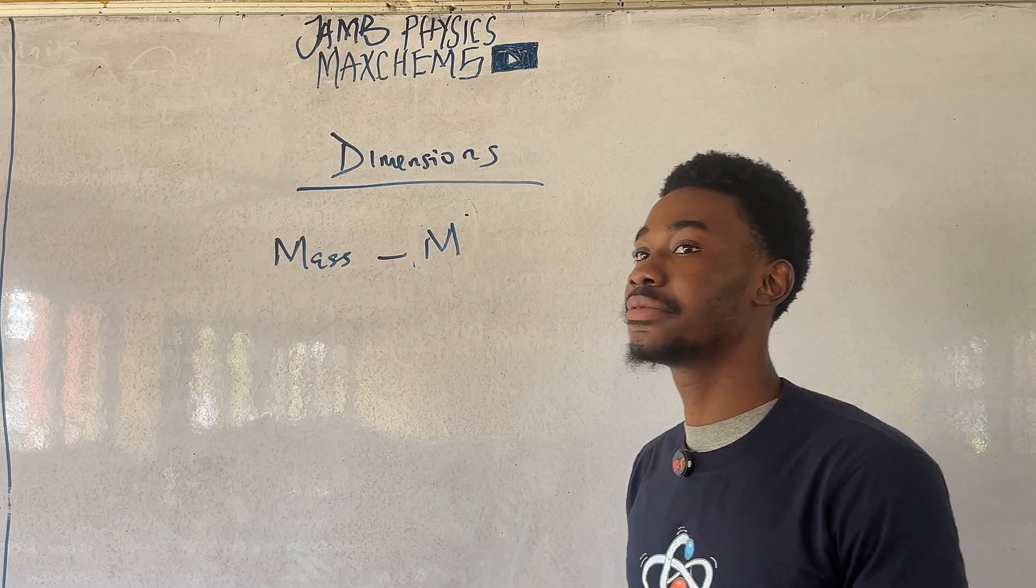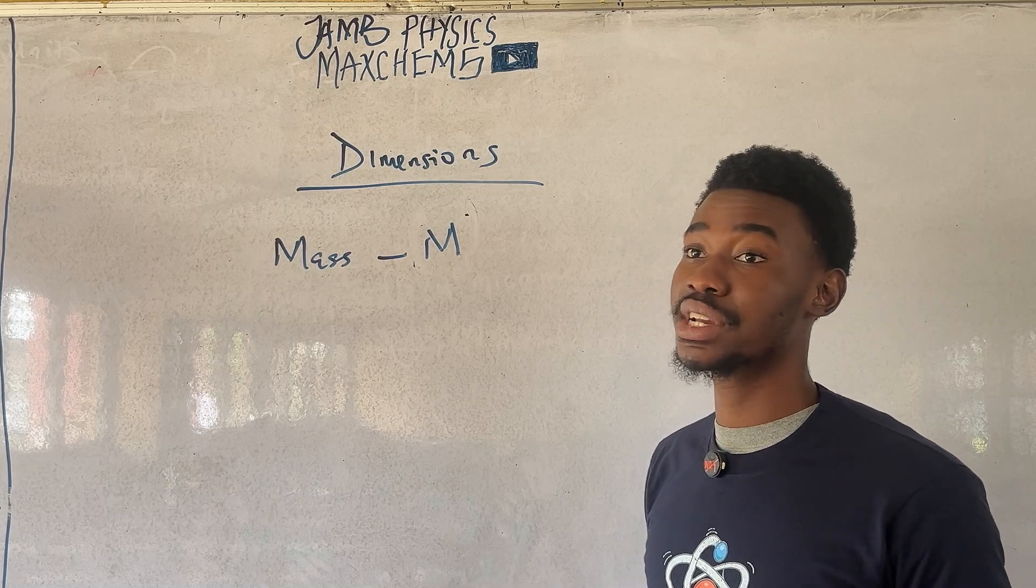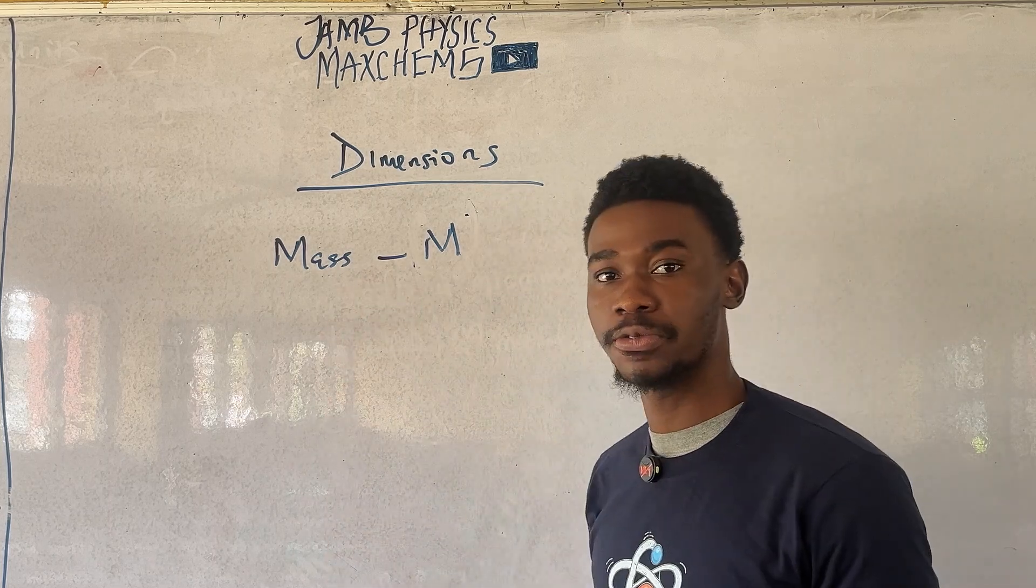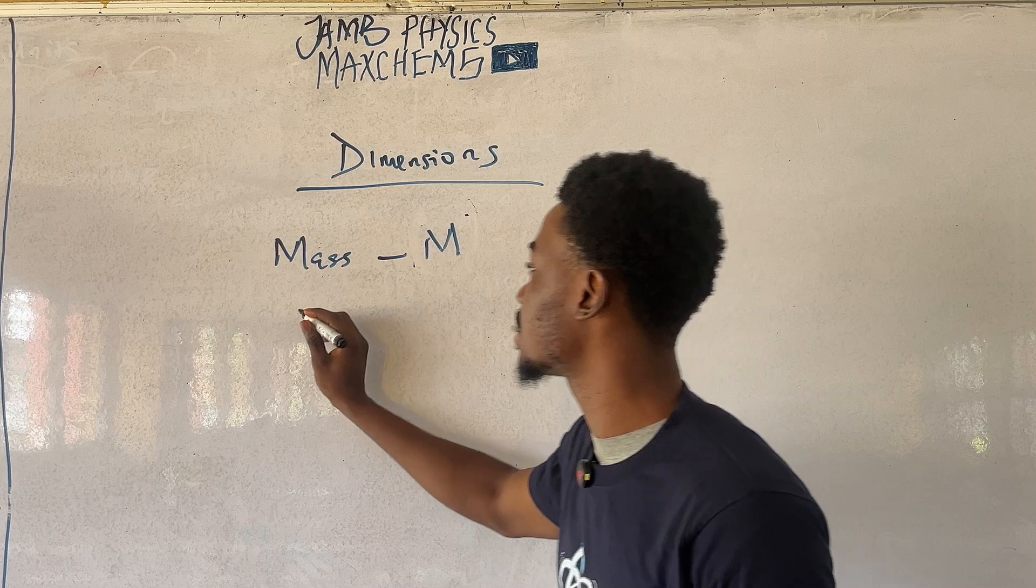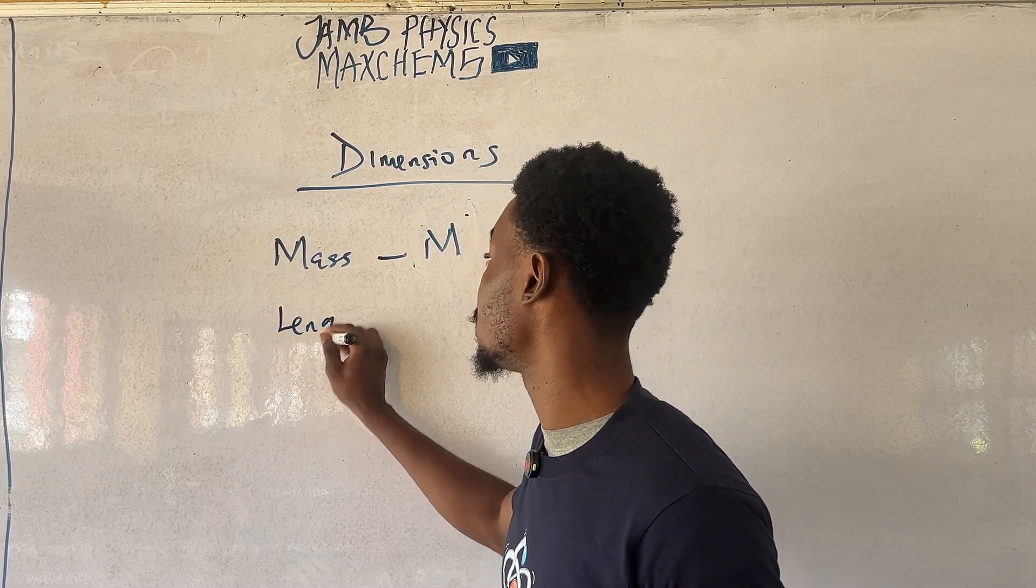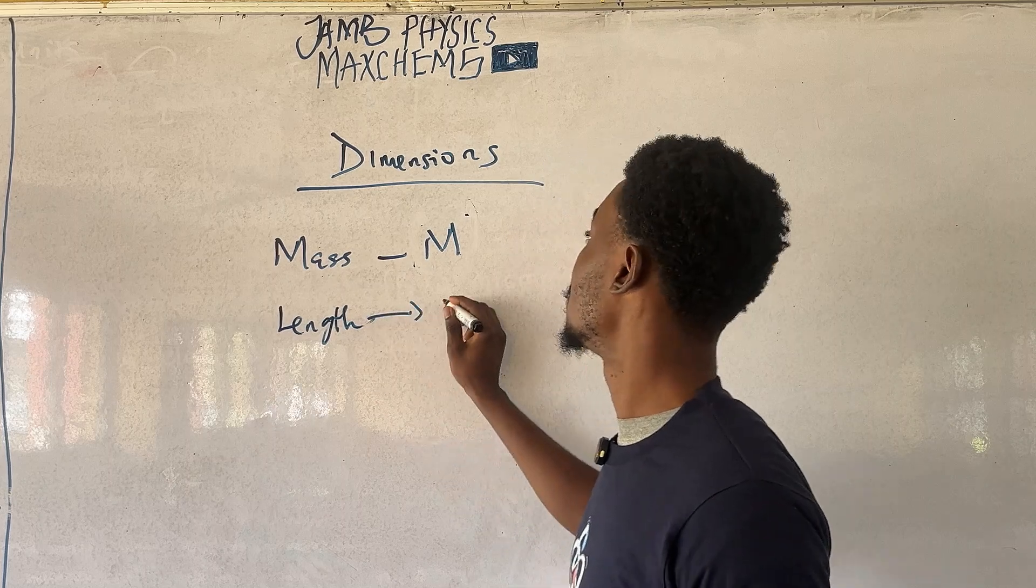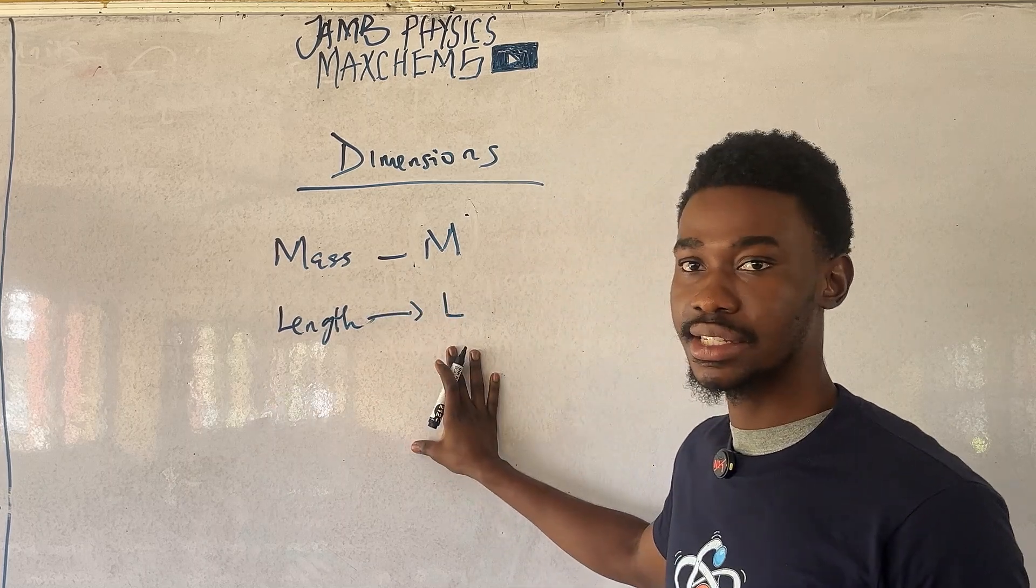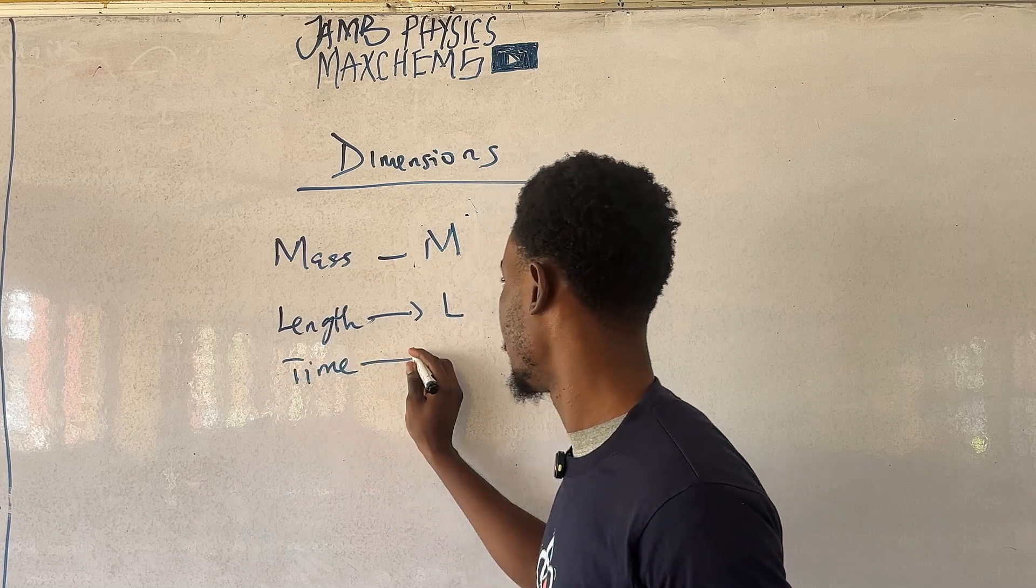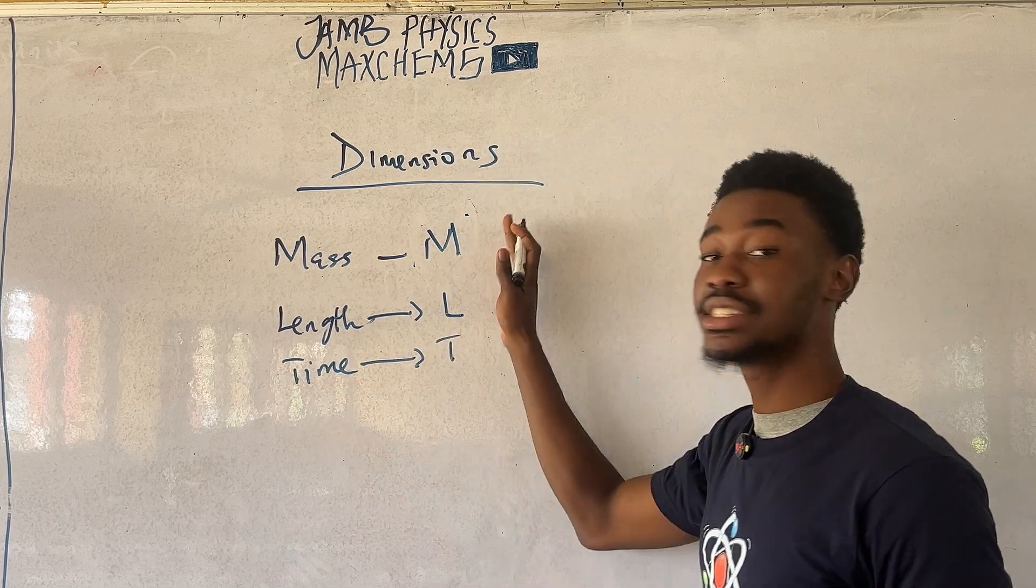Now, every derived quantity, like I said, is expressed in terms of a fundamental quantity. So, these are the basis of writing dimension. The next fundamental quantity would be length. It's written like this. And the next would be time. T. I'm sure you've seen this before, MLT.